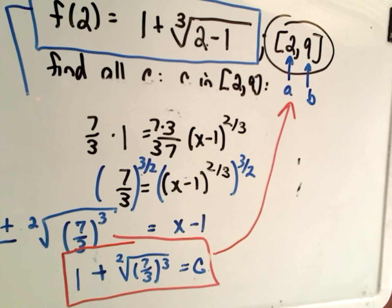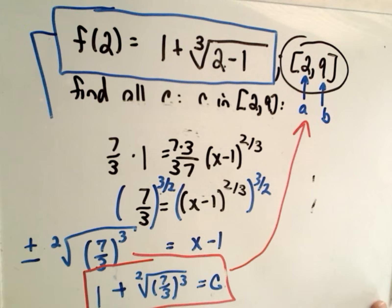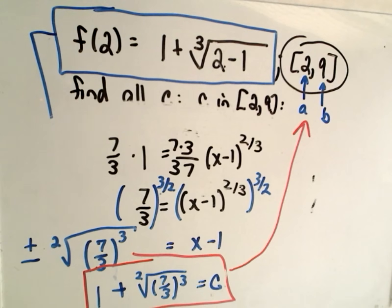We've now found the point c in the interval 2 to 9 where the derivative equals the slope of the secant line connecting the endpoints. I hope this example wasn't too bad. Feel free to post comments and hopefully someone can point you in the right direction.